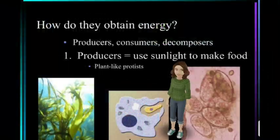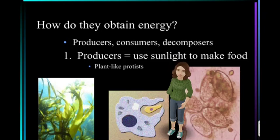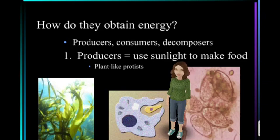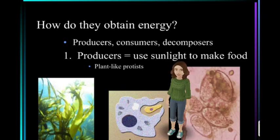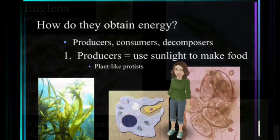How do protists get energy? Some are producers, some are consumers, some are decomposers — another way to say that is some are plant-like, some are animal-like, and some are fungus-like. The first group we're going to talk about are producers. They use sunlight to make food, otherwise known as plant-like protists.